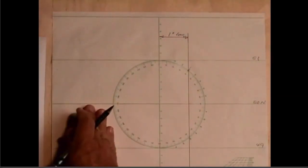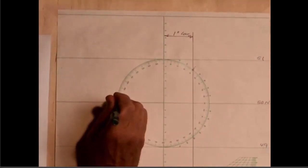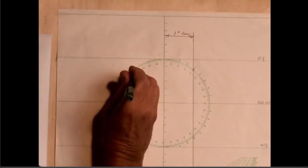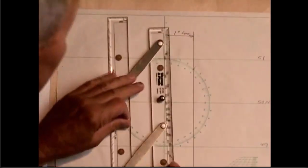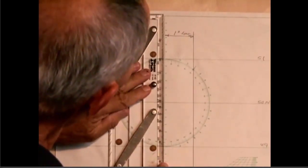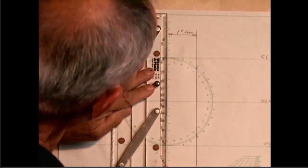I'm going to do the same thing on this side: 10, 20, 30, 40, 50. I'm going to go through that point and I'm going to do exactly the same thing. Draw another line parallel to the center.